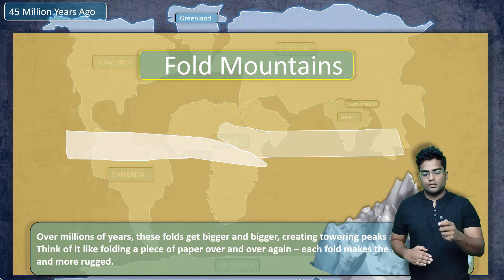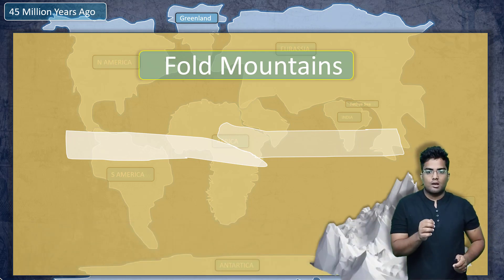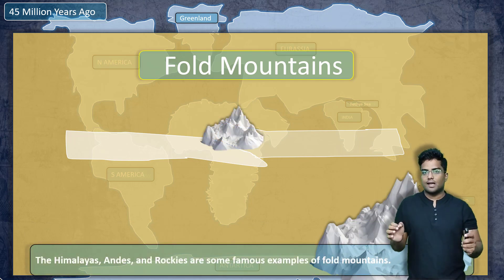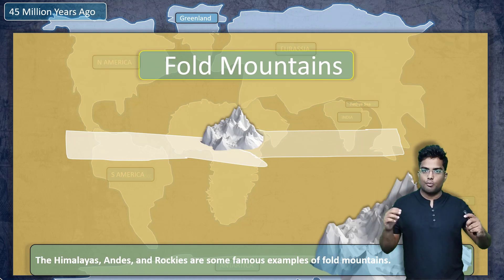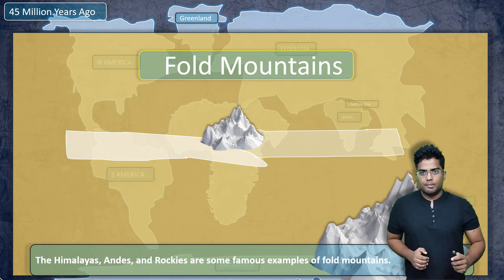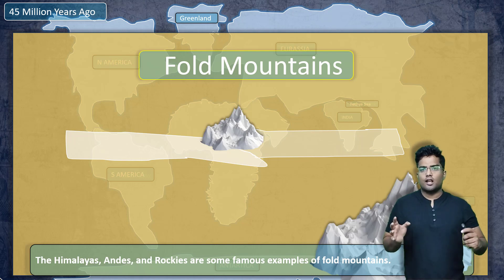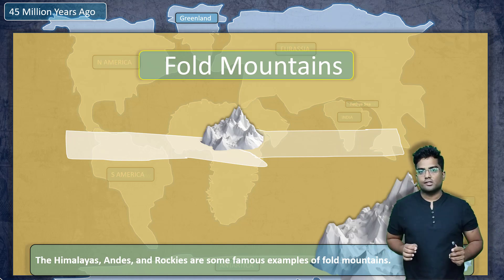Now over the million years, the one at the top slowly begins to form a mountain. Now this is not exactly the correct explanation. We will learn how the fold mountains are exactly formed when we learn about the formation of Himalayas, because there are many other things like sedimentation, erosion, and all those things you have to learn to know how a fold mountain is formed. I'm just talking about a small glimpse, a small process.